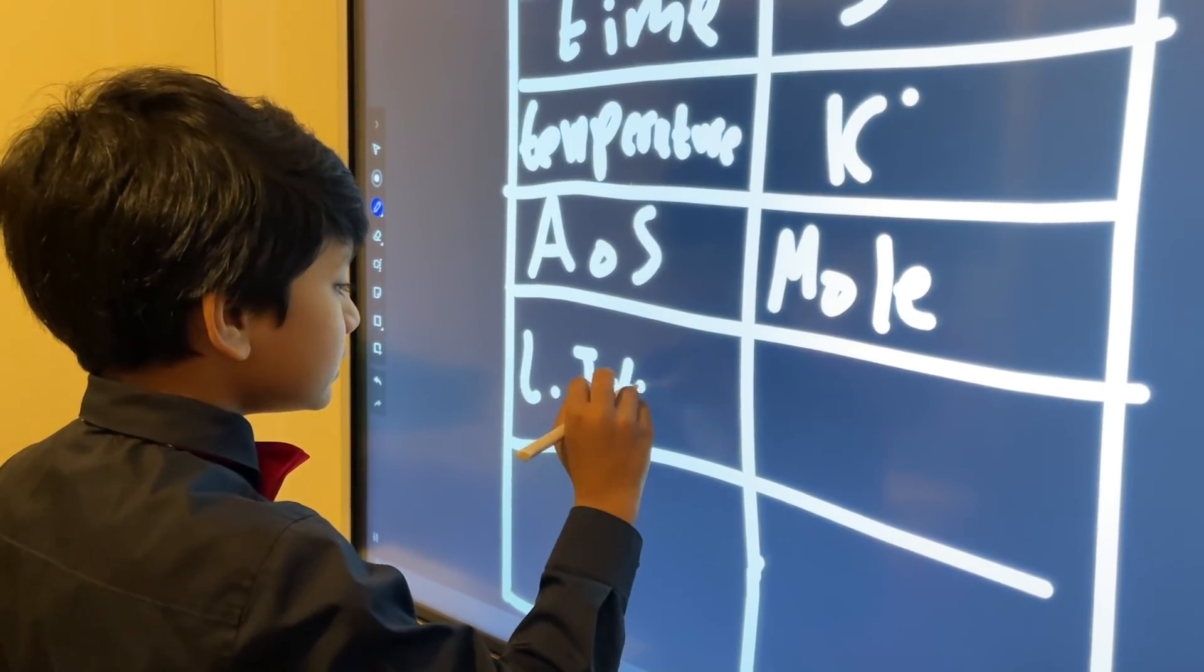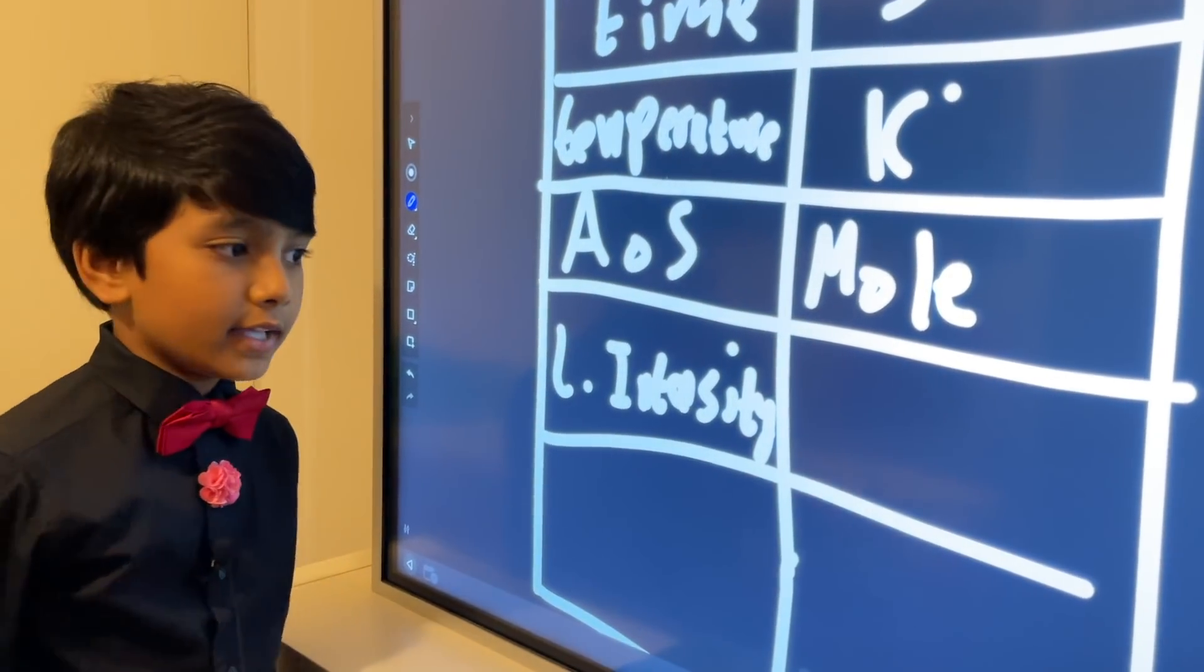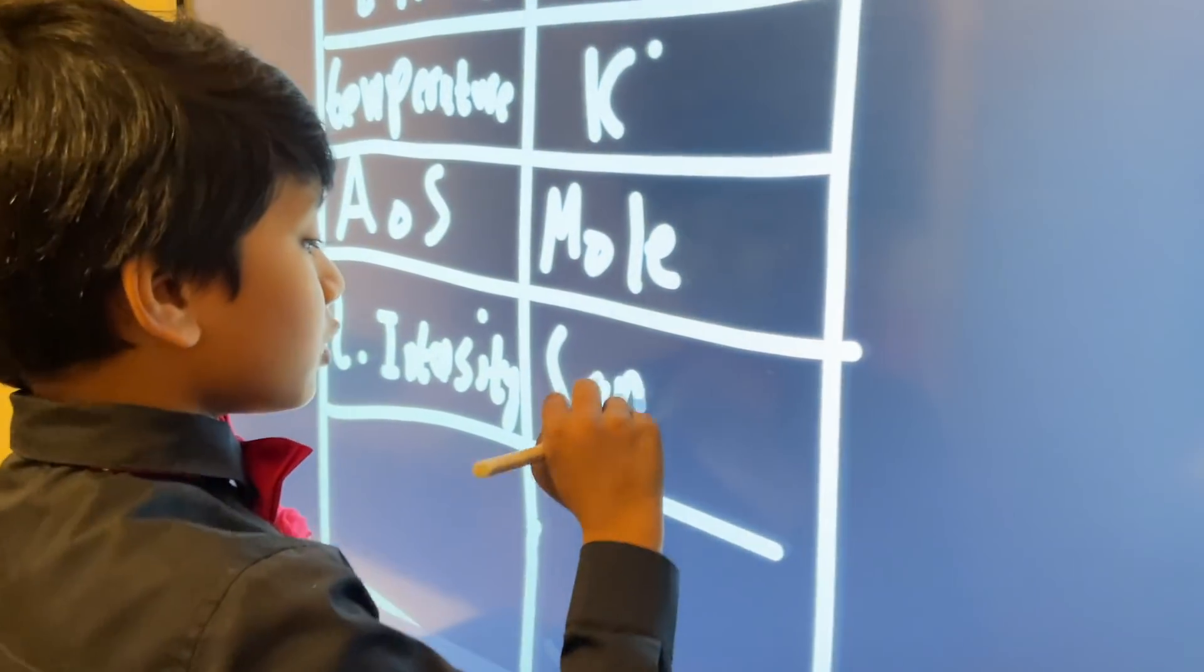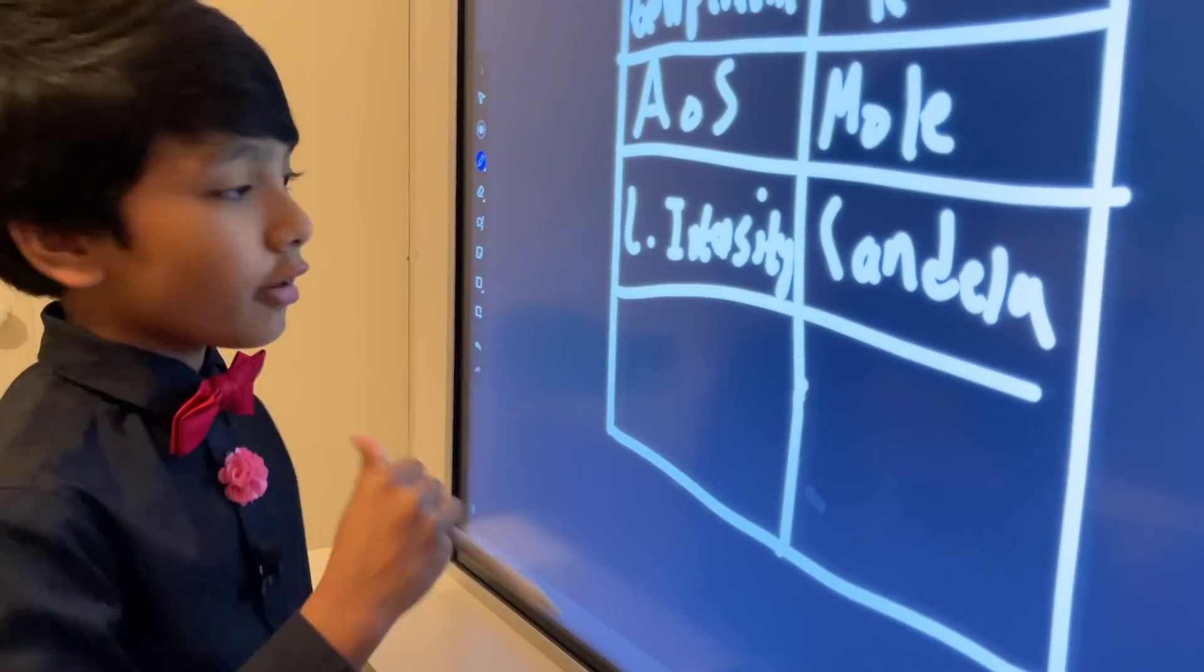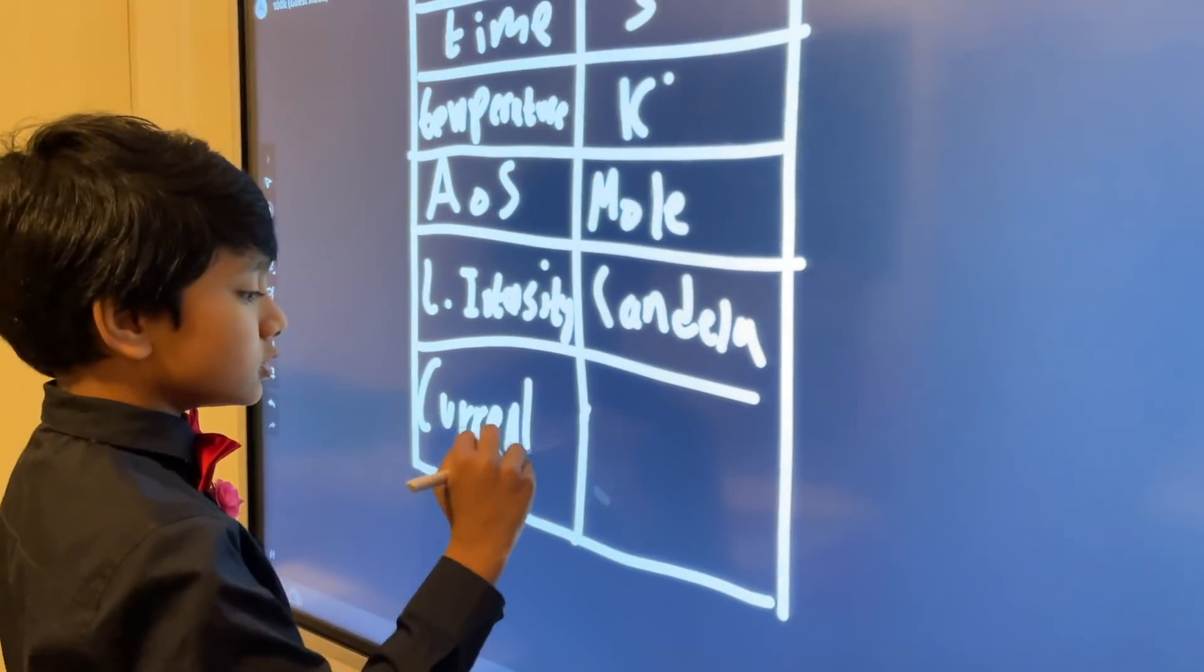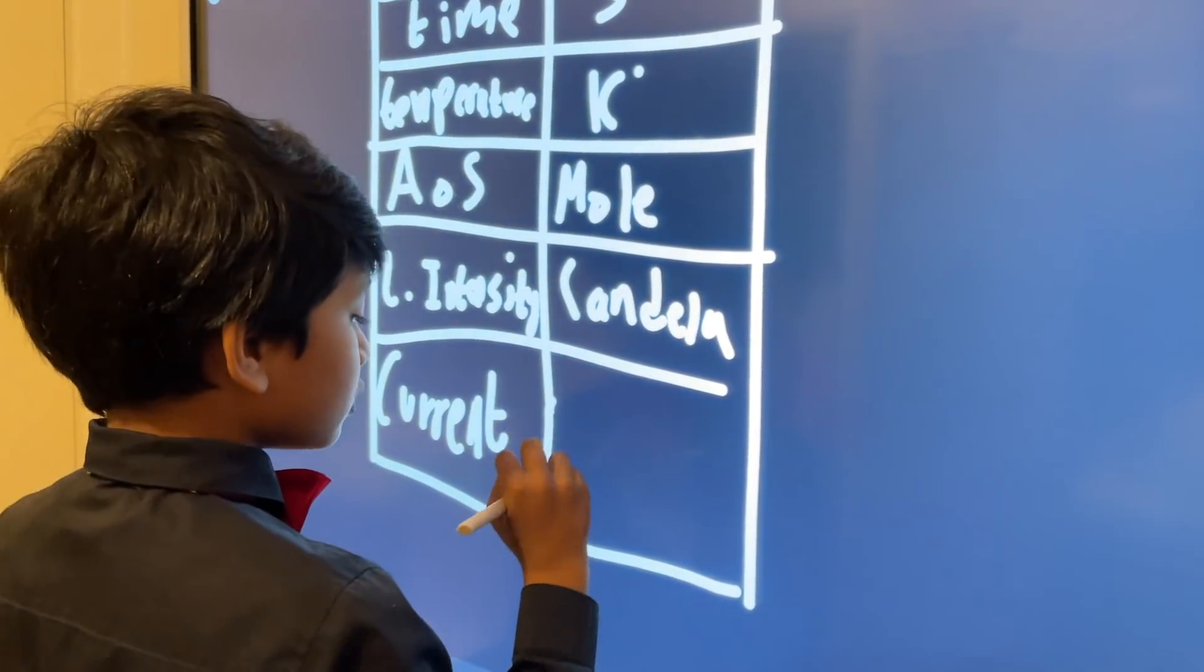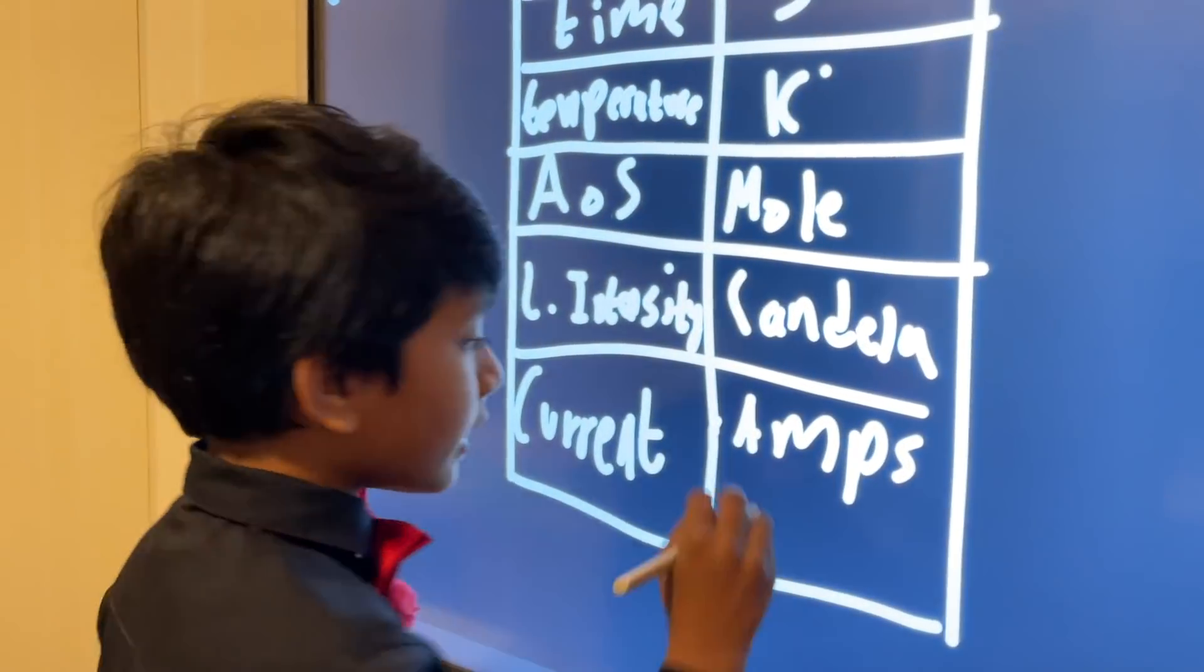Luminous intensity, which is basically just how bright light is. And that's measured by candela. Ah, yes. Sorry. The thing that's powering this board right now. Current. Flow of electrons. And we use, to measure that, amp or for long, amperes.